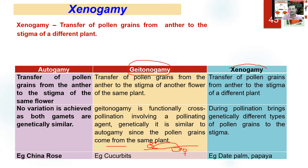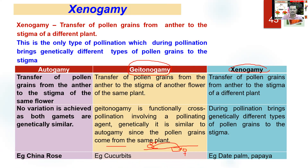Xenogamy can be seen in China rose as well as cucurbits. But in some plants like papaya, only xenogamy is seen — because the plants have unisexual flowers and a plant will have either only male flowers (staminate) or only female flowers (pistillate). So that is the example you should remember. These three types are very handy and questions are generally asked on them — so you should be very clear.